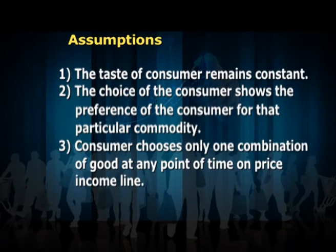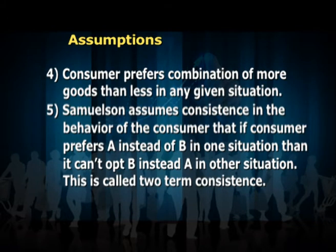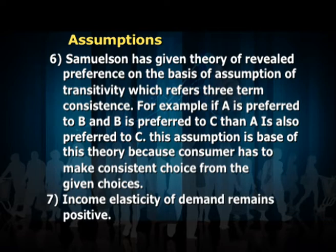The assumptions are: one, the taste of the consumer remains constant. Two, the choice of the consumer shows their preference for a particular commodity. Three, the consumer chooses only one combination of goods at any point in time on the price-income line. Four, the consumer prefers a combination of more goods over less in any given situation. Five, Samuelson assumes consistency in behavior — if a consumer prefers A instead of B in one situation, they cannot opt for B instead of A in another situation. This is called two-term consistency.